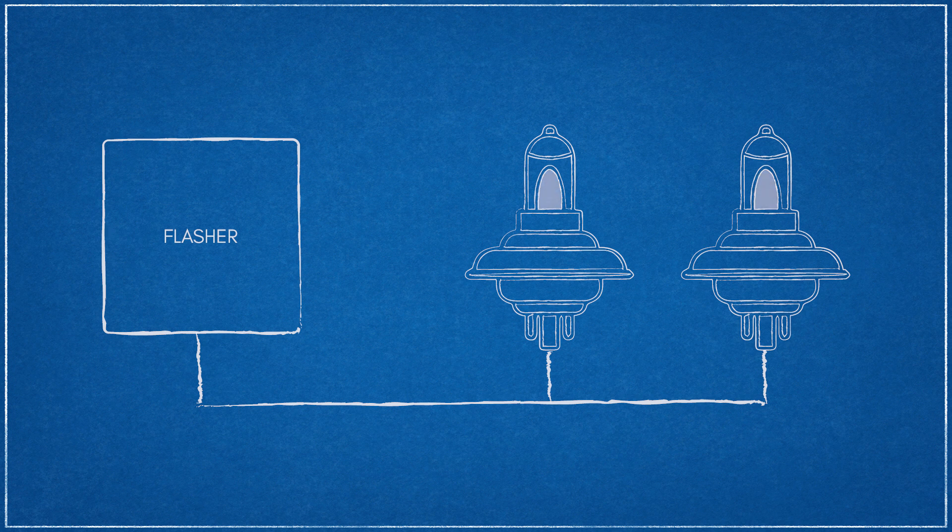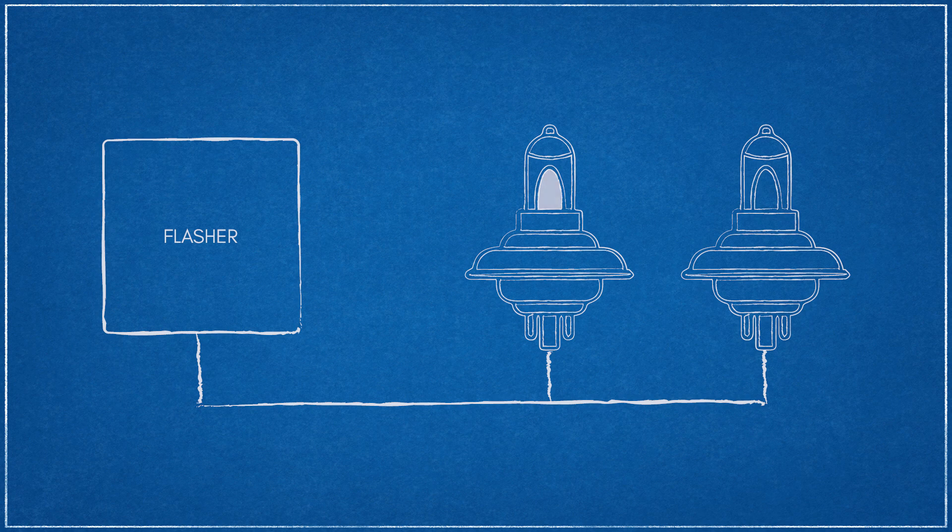When a light bulb fails, the amount of current flowing through the heating element changes, causing the change in the heating rate. This results in a faster flashing rate. This is why our turn signals or hazard signals flash faster when a signal bulb fails.